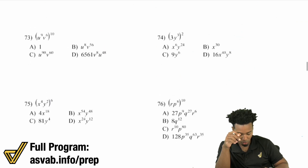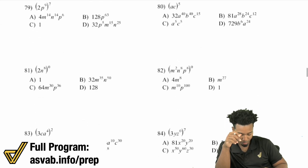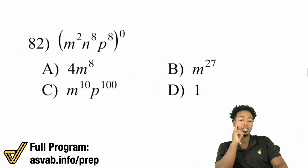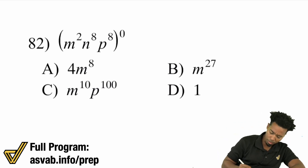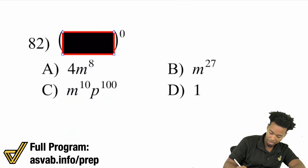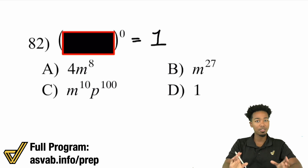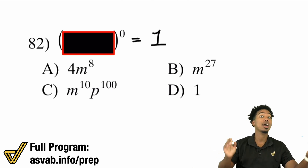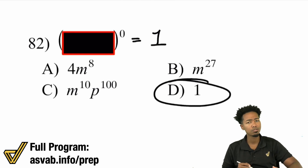Let's take care of problem number 82. This seems complicated — absolutely not. Anything to the power of 0 is 1. It doesn't matter what you have inside. It could be 17.26590, it could be 2x squared y to the fifth power — anything to the power of 0 is 1. Don't get confused. You're fine.